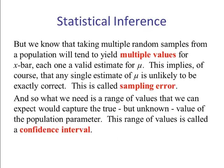Now just as we've seen in section 9.1 on estimating population proportion, we know that taking multiple random samples from a population will tend to yield multiple values of X-bar. Each one is a valid estimate for mu. This implies, of course, that any single estimate of mu is unlikely to be exactly correct. This is known as sampling error.